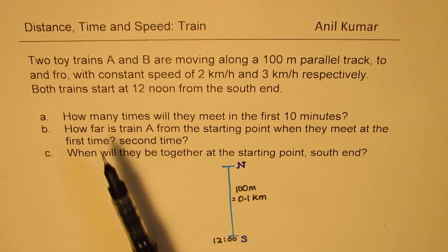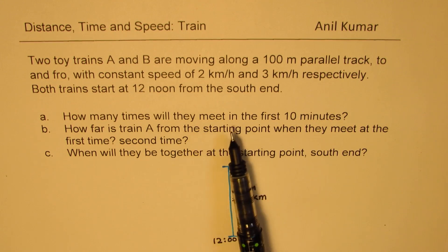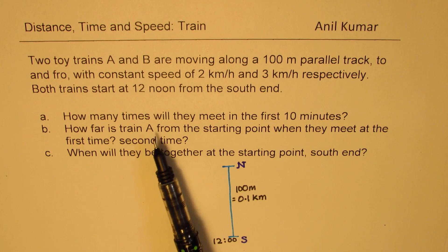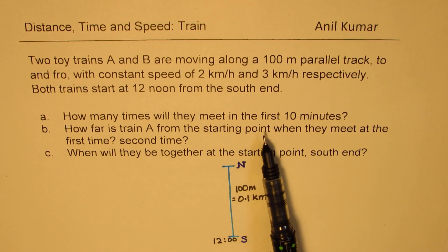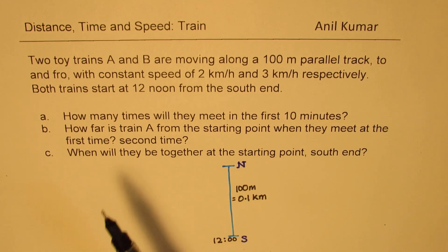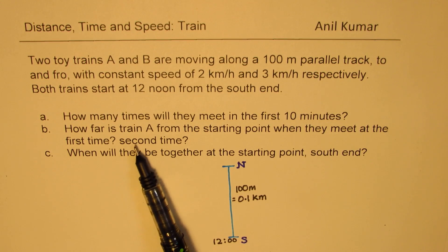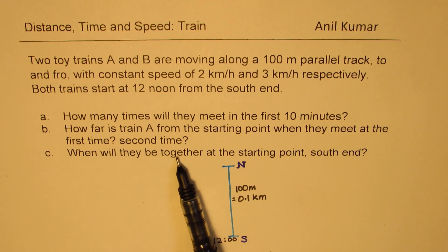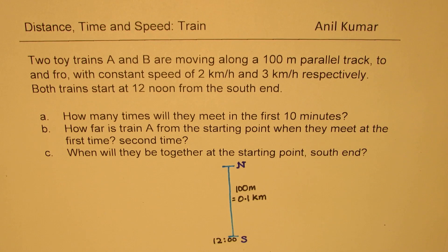There are three parts to this question. Part A: how many times will they meet in the first 10 minutes? Part B: how far is train A from the starting point when they meet for the first and second time? Part C: when will they both be together at the starting point — the south end? You can pause the video, answer these questions, and then look at my solution.